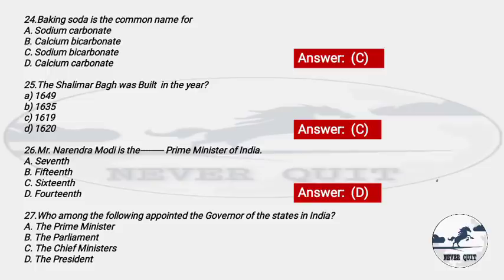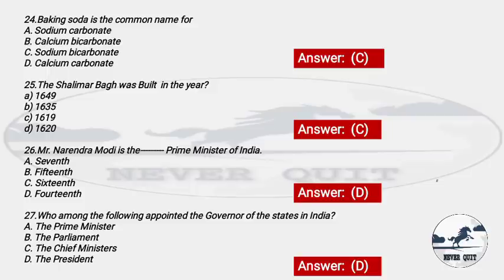Question 27: Who among the following appoints the Governor of the states? Options: A) Prime Minister, B) Parliament, C) Chief Ministers, D) President. The right answer is option D — President. The President appoints the governors of states, the Chief Justice of India, and also the Chief Election Commissioner of India.